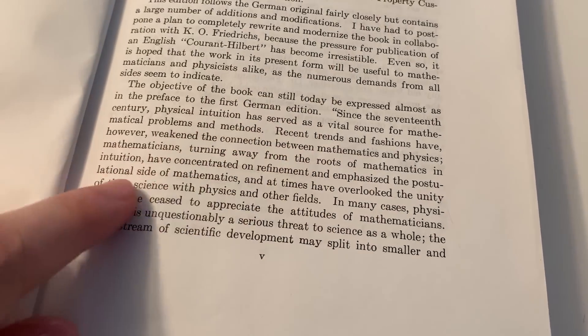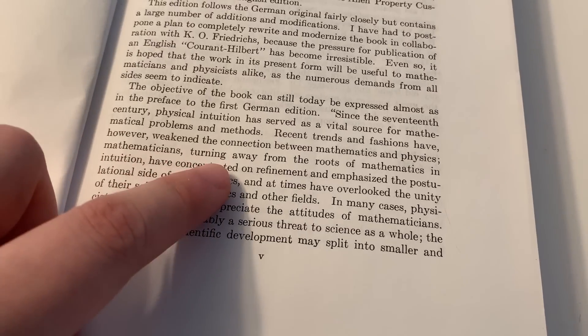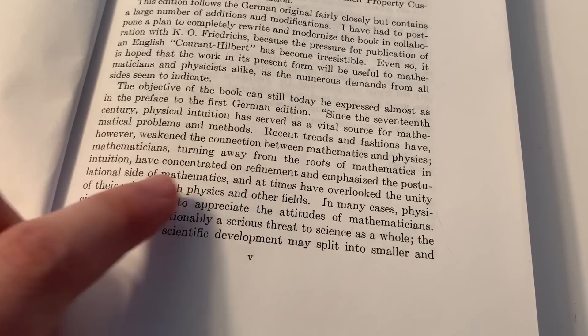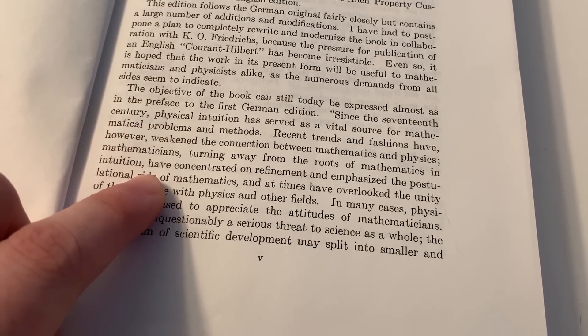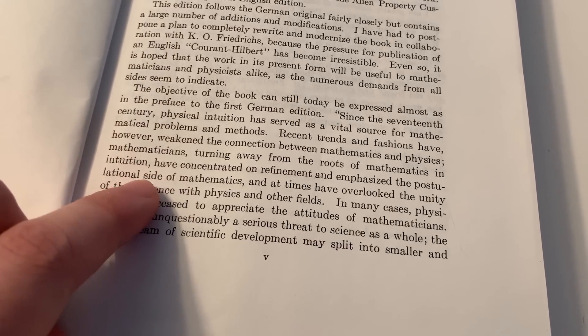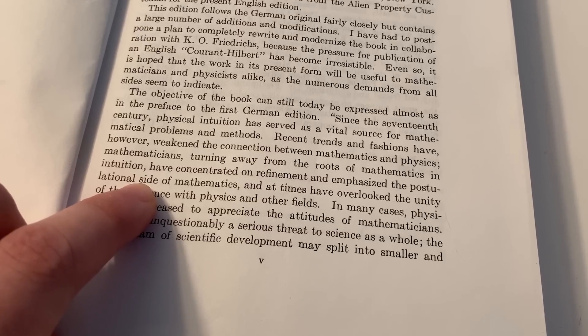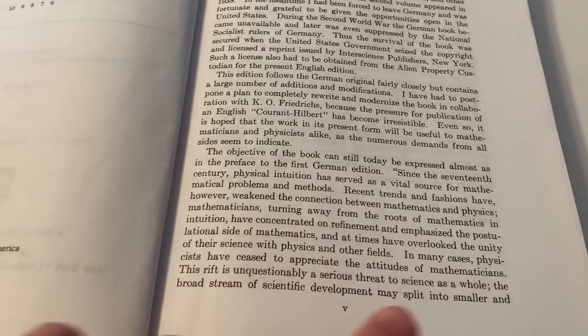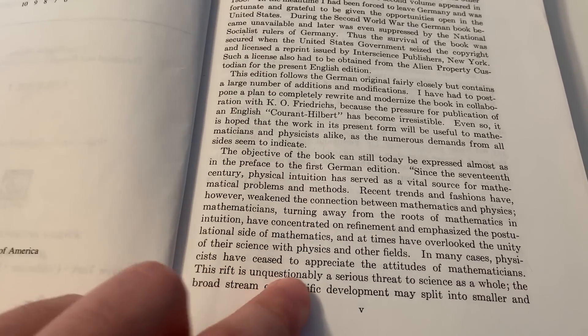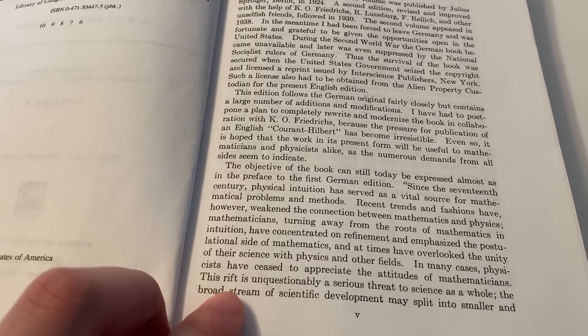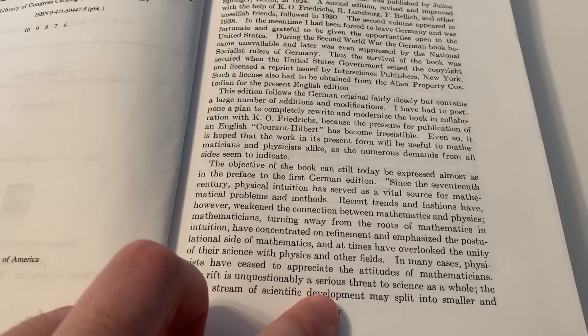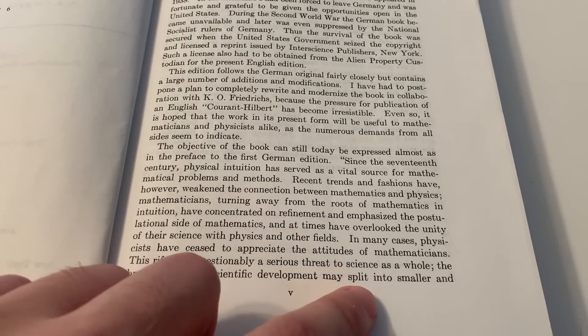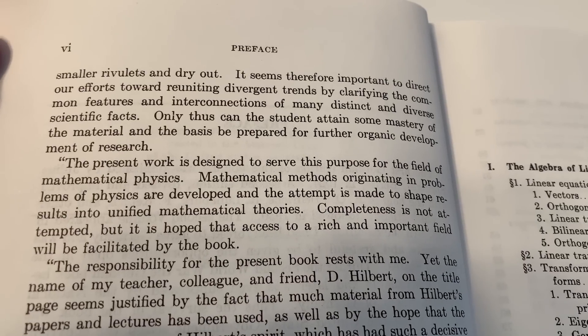The recent trends and fashions have, however, weakened the connection between mathematics and physics. Mathematicians, turning away from the root of mathematics in intuition, have concentrated on refinement and emphasized the postulational side of mathematics, and at times have overlooked the unity of their science with physics and other fields. In many cases, physicists have ceased to appreciate the attitude of mathematicians. This rift is unquestionably a serious threat to science as a whole. The broad stream of scientific development may split into smaller and smaller rivulets and dry out.